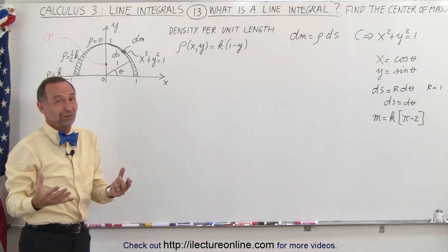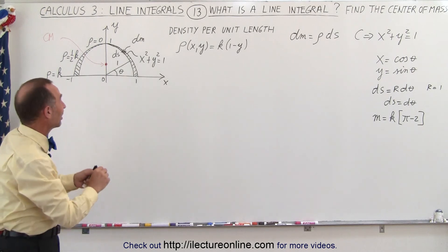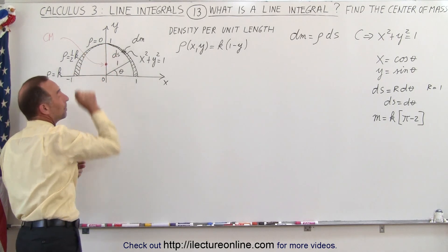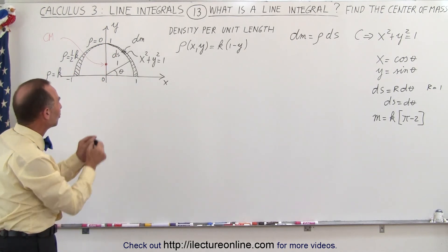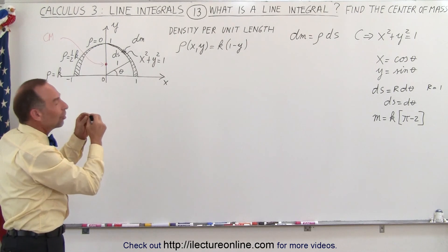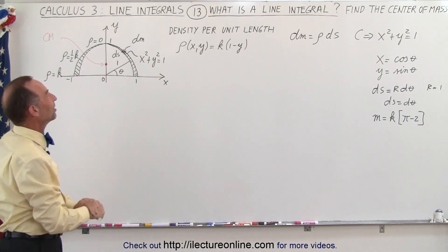Of course, zero density means there would not be any wire there, but that's just at the very, very top. We can just go ahead and assume that when you get infinitely close, there's still a very tiny amount of density there.